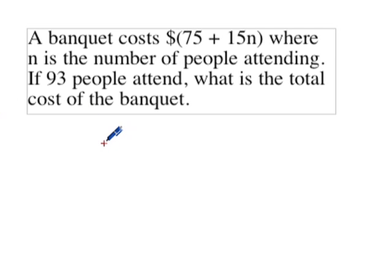In this problem we're being asked to evaluate an algebraic expression. The only tricky part is that it's a word problem, so there's a little bit of reading to do. It says a banquet costs $(75 + 15n), where n is the number of people attending. If 93 people attend, what is the total cost of the banquet?